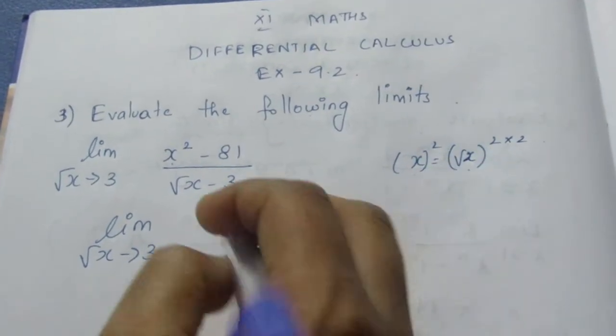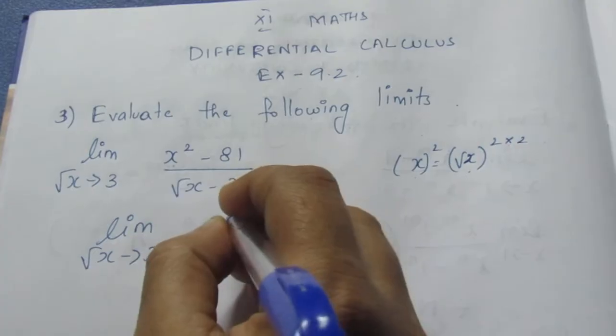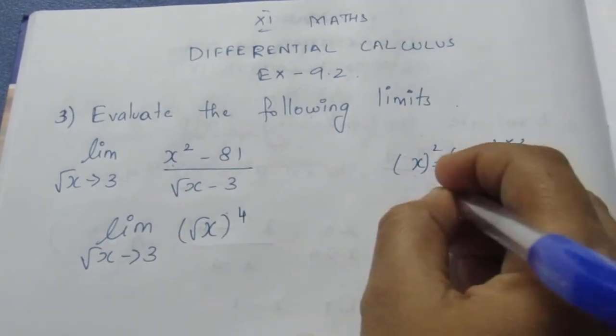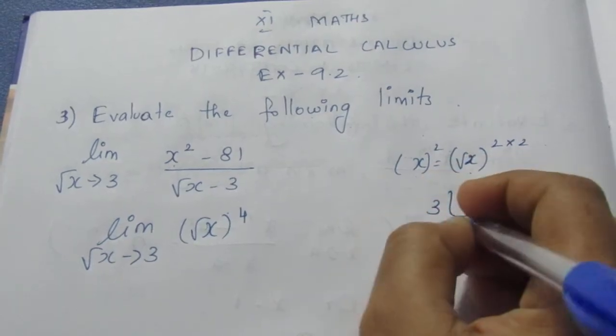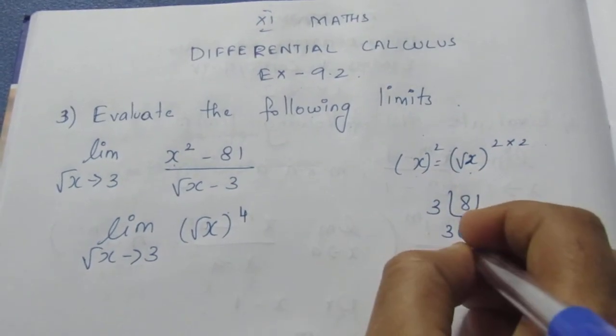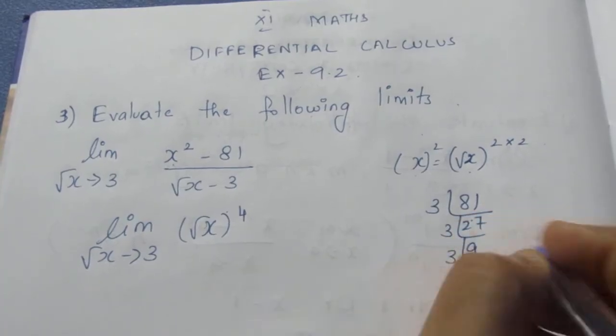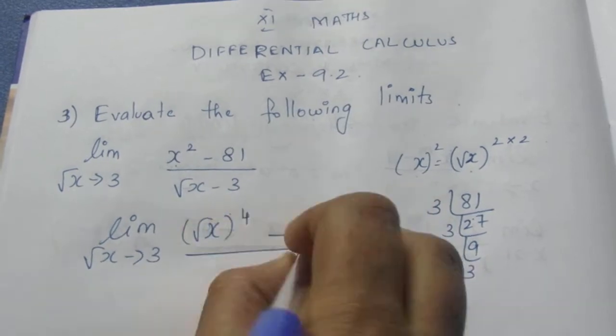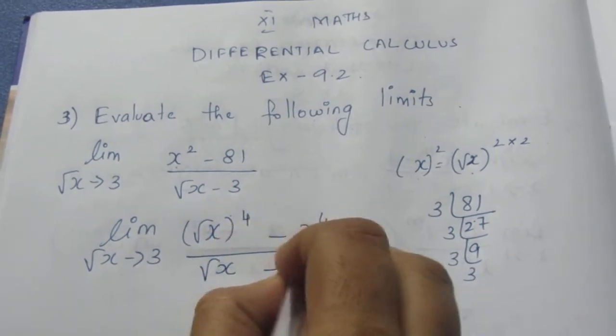What is root x power 4? Root x power 4. Let's do 81 prime factorization. This is 3 power 4. So minus 3 power 4 by root x minus 3.